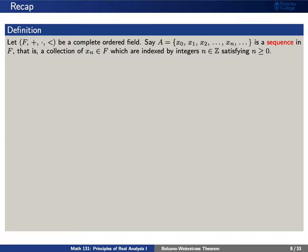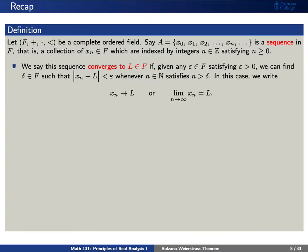Say that F is a complete ordered field, and let's say that capital A is a sequence, that is a collection of numbers x sub n which are indexed by the natural numbers n. In this case we'll count zero as a natural number. We'll say that the sequence converges to an element L if, given any positive epsilon, we can find a delta such that, in absolute value, x sub n minus L is less than epsilon whenever n is greater than delta.